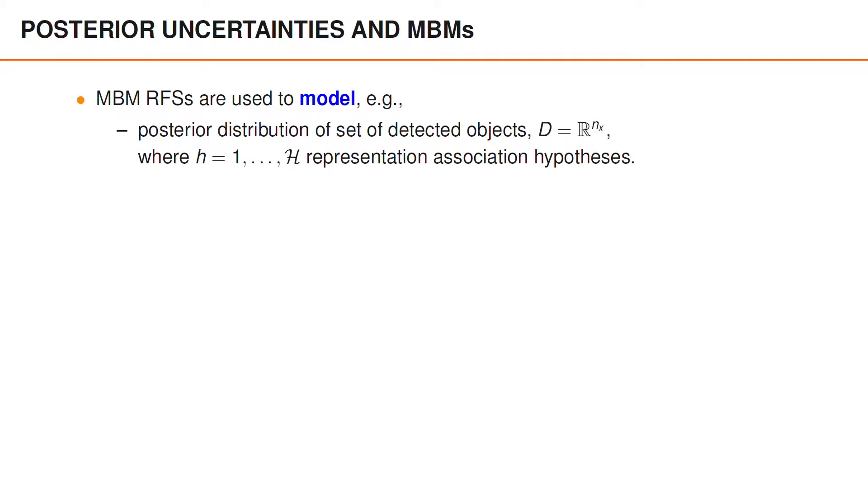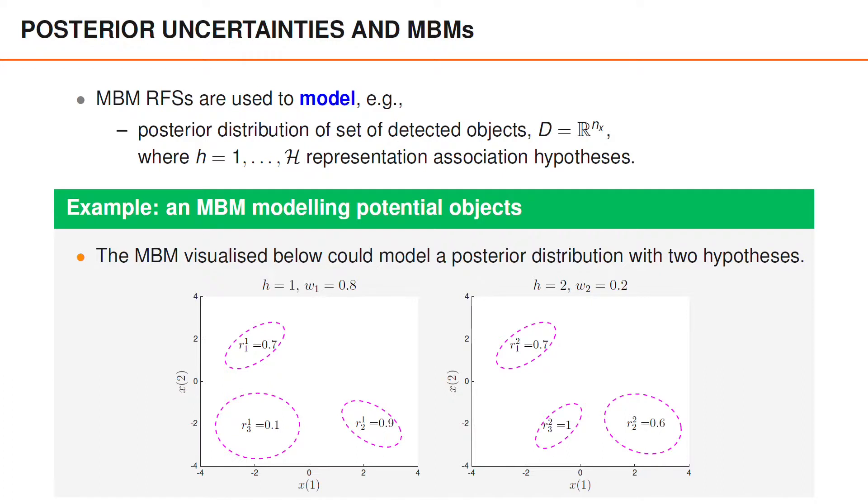We will mostly use multi-Bernoulli mixtures to represent the posterior distribution over the set of detected objects. And in this context, the capital H hypotheses represent different data association hypotheses. To visualize what this may look like, suppose there are two data association hypotheses, where the probability of the first hypothesis is W_1 equals 0.8, and the probability of the second hypothesis is W_2 equals 0.2.